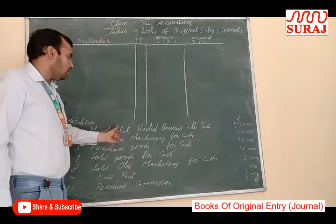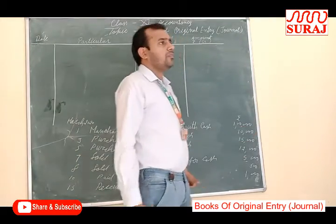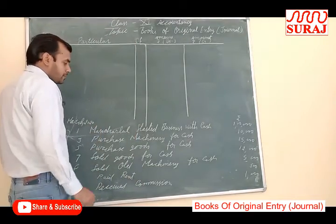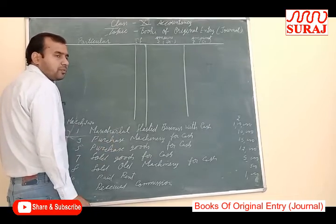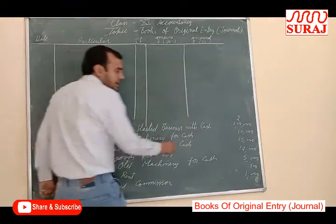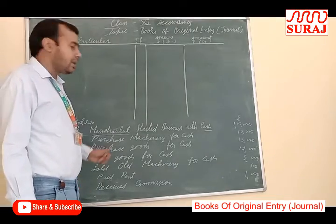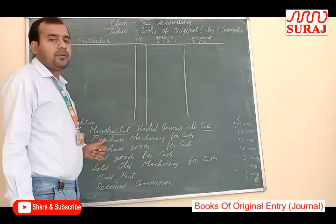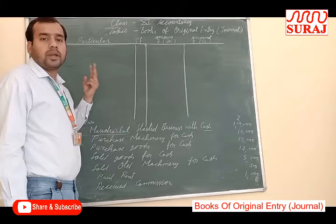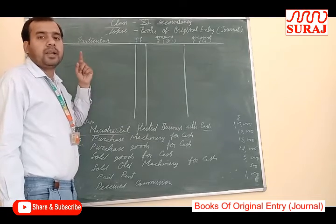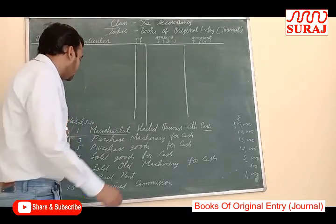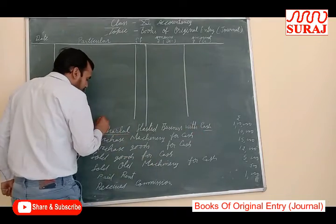First of all, Manohar Lal started business with cash Rs. 1 lakh. We find out the accounts involved in this transaction. In this transaction, Manohar Lal and cash are involved. But Manohar Lal is the owner of the business, and we never use the name of the owner. For the owner, we use two things: capital and drawing. If he invests money, then we use capital. If he withdraws money, then we use drawing. In this transaction, money is invested, so we use capital.